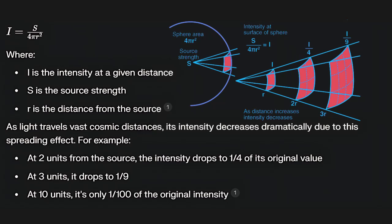For example, at two units from the source the intensity drops to one-fourth of its original value. At three units it drops to one-ninth of its original value. At ten units, one-hundredth of the original intensity.